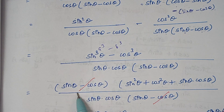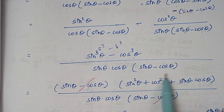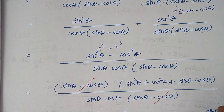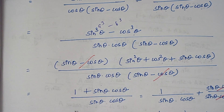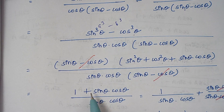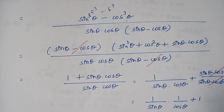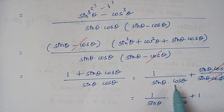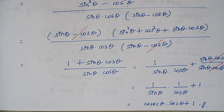The two sin theta minus cos theta terms cancel each other. The remaining numerator has sin square theta plus cos square theta, which equals 1. So we have 1 plus sin theta cos theta, divided by sin theta cos theta. Writing as individual terms: 1 by sin theta cos theta plus sin theta cos theta by sin theta cos theta. The second term cancels, leaving 1 by sin theta cos theta plus 1. Splitting: 1 by sin theta multiplied by 1 by cos theta plus 1, which is cosecant theta times secant theta plus 1 — that is 1 plus secant theta into cosecant theta, which is what we needed to prove.